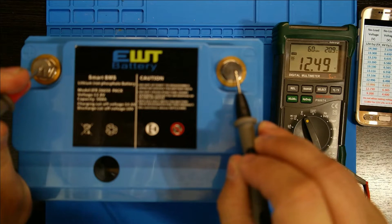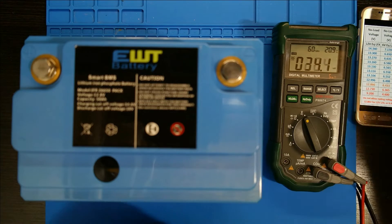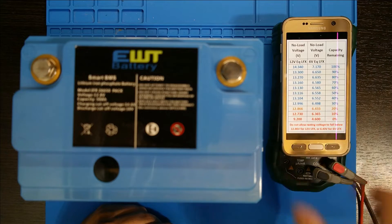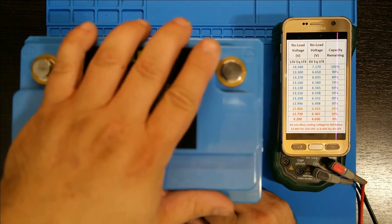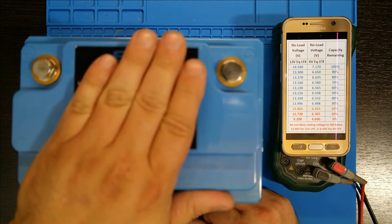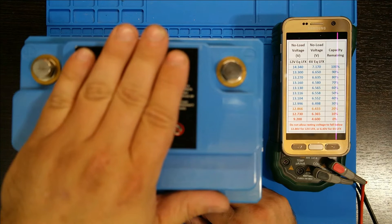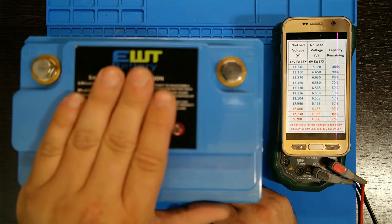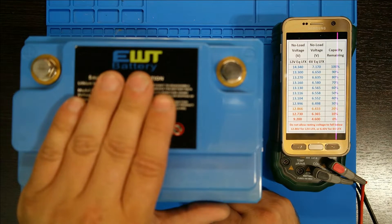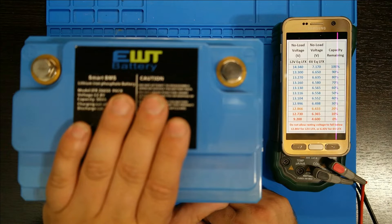This thing's actually sitting at 12.4 with no load. Yeah, 12.49, so it's practically discharged all the way. So we're gonna have to give this a charge all the way up first and then we'll do a capacity test and make sure nothing's damaged in here and make sure we still get our 50 amp hours out of this.